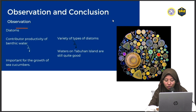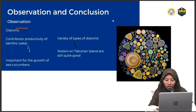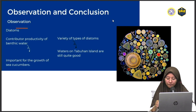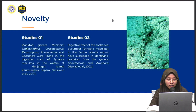The discovery of the feeding habits of Neocambar synaptamaculata on Tabuan Island indicates a suitability between the digestive content and feeding habits. The variety of diatom types in the digestion of Neocambar synaptamaculata can also show that the water on Tabuan Island is still quite good, because diatoms can be used as indicators of water quality. There are two prior studies that identified plankton in the digestive tract of synaptamaculata.